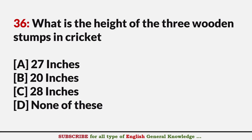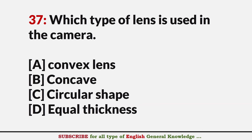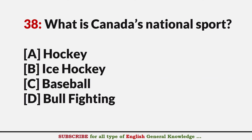What is the height of the three wooden stumps in cricket? Answer C: 28 inches. Which type of lens is used in a camera? Answer A: Convex lens. What is Canada's national sport? Answer B: Ice hockey.